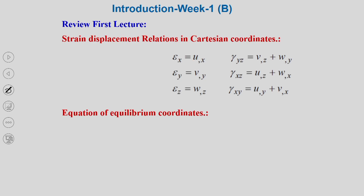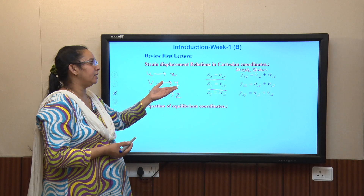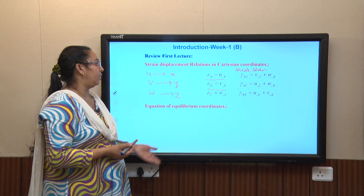In the very first lecture, I gave you the relations between strain and displacement in Cartesian coordinates. Epsilon xx, epsilon yy, epsilon zz are represented as del u by del x, del v by del y, del w by del z, where u is displacement along x, v along y, and w along z. Then the corresponding shear strains gamma yz, gamma zx, and gamma xy — these are the standard notations given in the book of advanced solid mechanics.